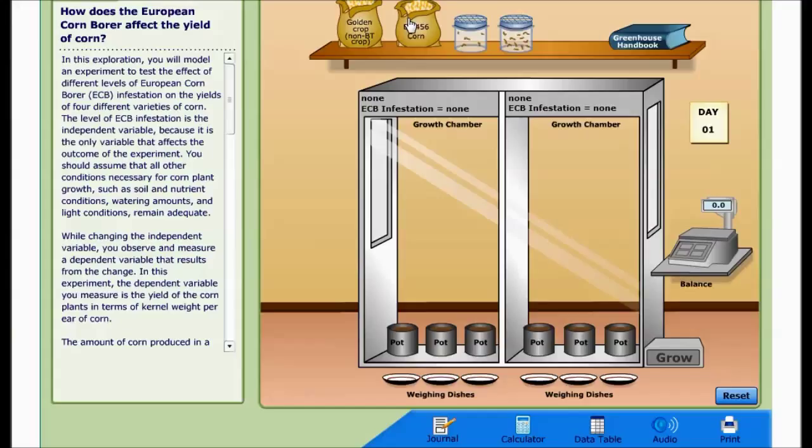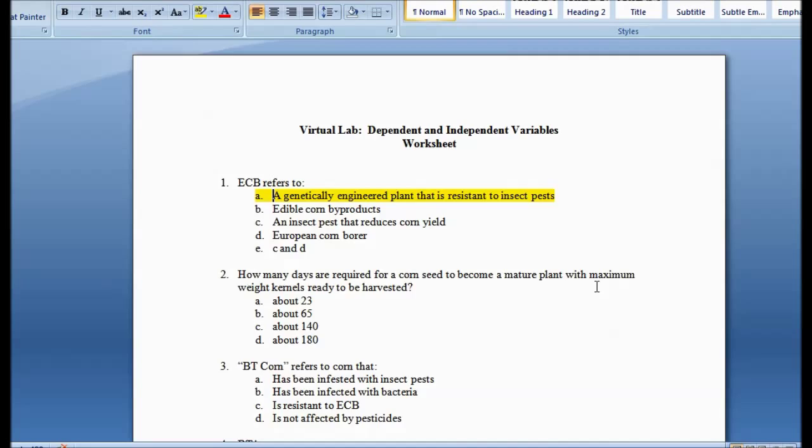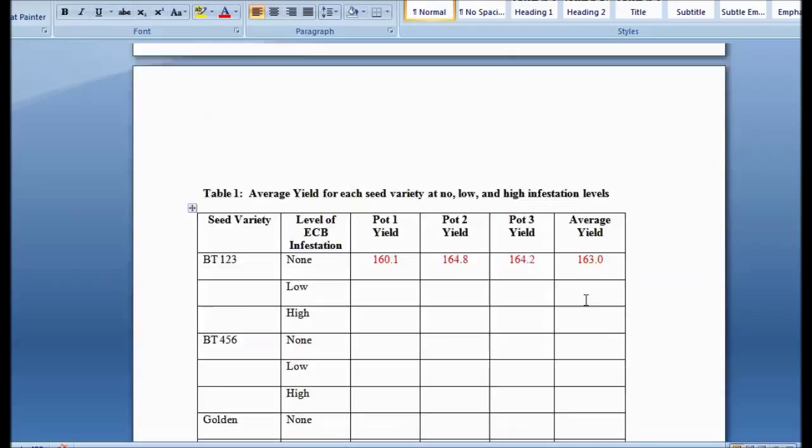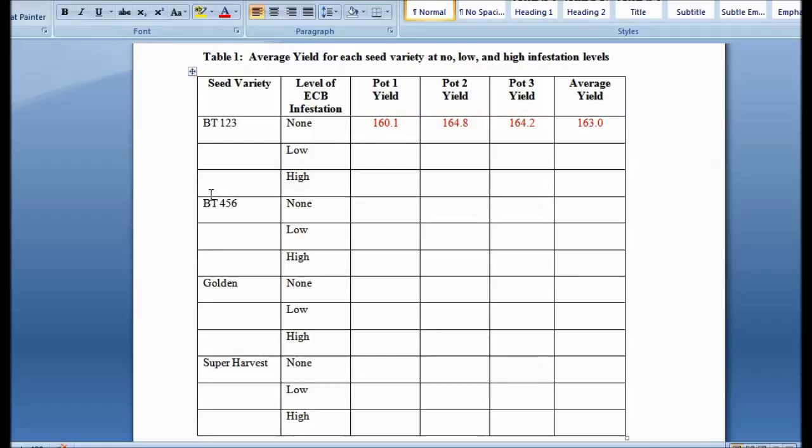Alright, let's go back to our worksheet so you see how this all fits in. So you finished all your questions from the handbook and now you have a large table, table one, to fill out. You'll see that you have one, two, three, four varieties you're going to test. Two of them are BT, which are the genetically altered ones, and two of them are not genetically altered, the Golden and the Super Harvest.